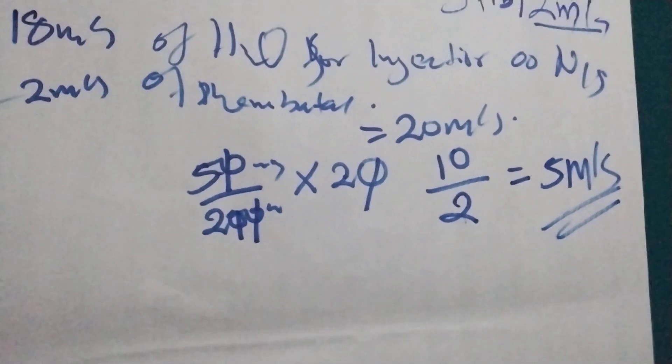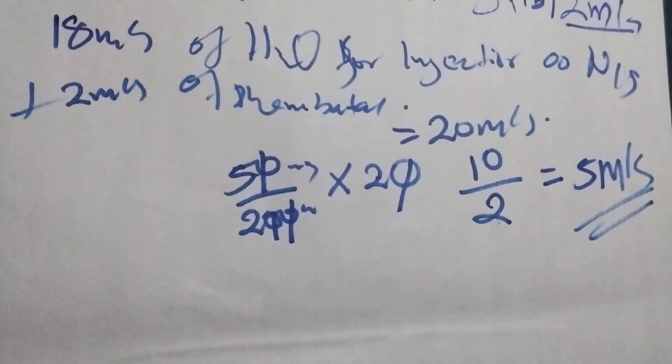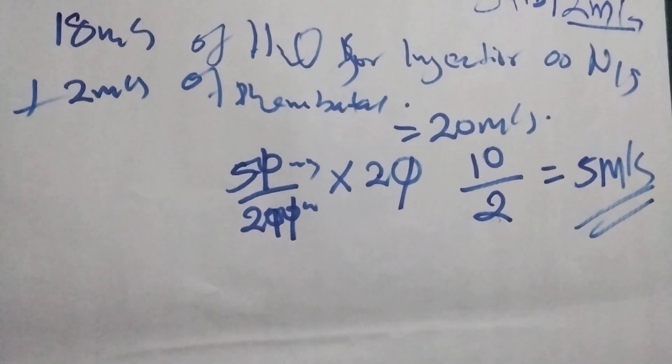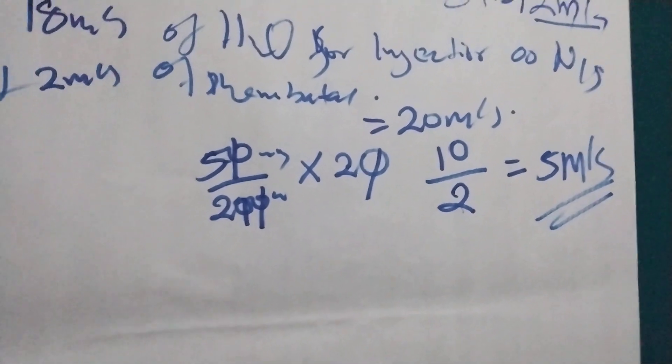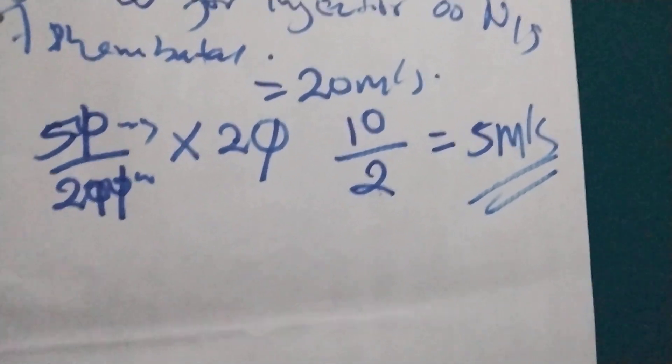We are going to aspirate 5 mls and we give to this person. This is an older child. And it has been given stat. And if the child is convulsing, you can give that one.